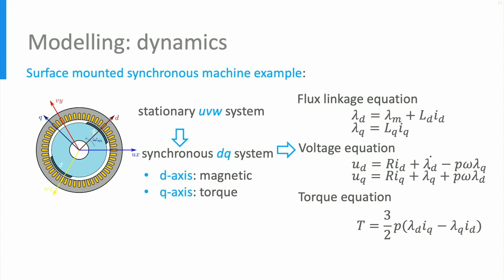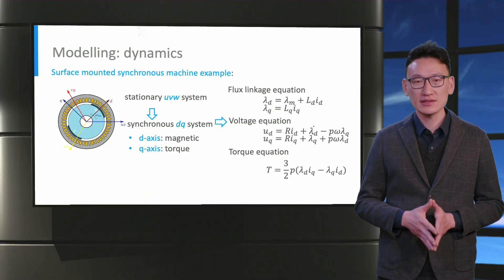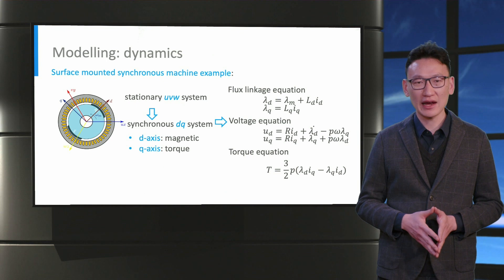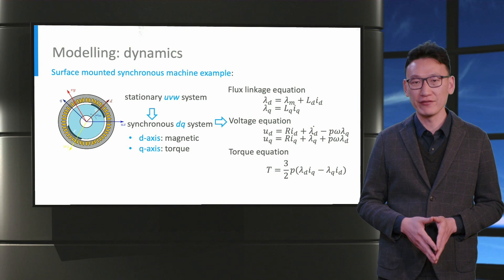This transformation leads to a set of equations in the dynamic model. In the equations, lambda denotes the flux linkage and the subscript denotes the D or Q components. L is the inductance, R is the resistance, I is current, U is voltage, and P is the number of pole pairs. That's the end of the lecture on electric machines. The next lecture will be about the inverters used to drive electric machines in EVs.